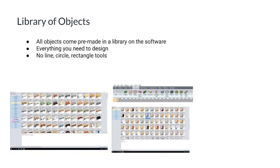All objects come pre-made in a library in RealTime. Any object or material you need is here, and there are even brand-specific objects if you want to use certain brands in the landscape. Unlike AutoCAD and Dynascapes, there is no line, circle, or rectangle tool. AutoCAD has no library of objects, but Dynascapes does.